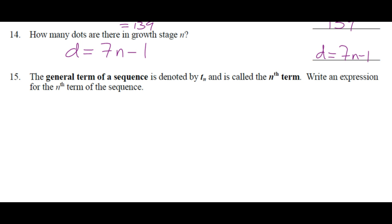The general term of a sequence is denoted by t sub n. Pretty much we say t sub n as opposed to tn. We say t sub n. And it's called the nth term. Write an expression for the nth term of the sequence. So really, this is the nth term, right? T sub n. Now, what that means is you're going to see an n on the right-hand side. So t sub n. And then there has to be some relation to the n. So if we say t 10, then we go 7 times 10 minus 1, which is equal to 69.